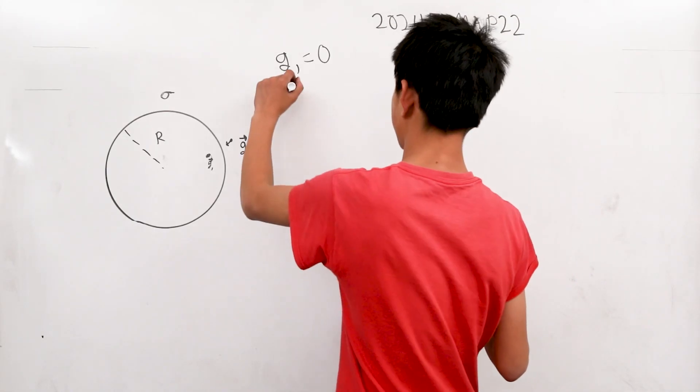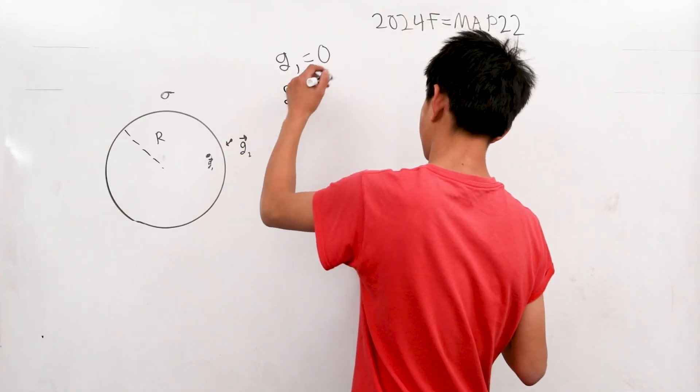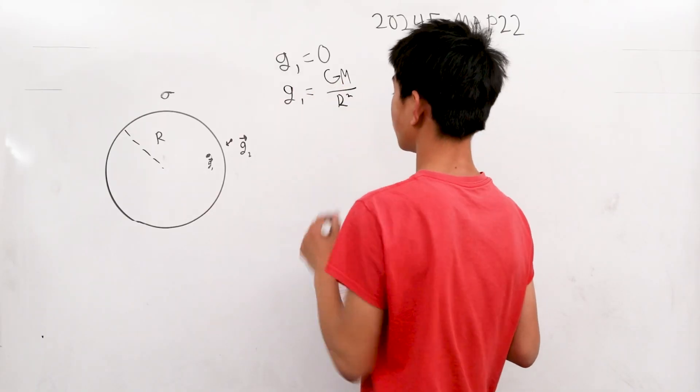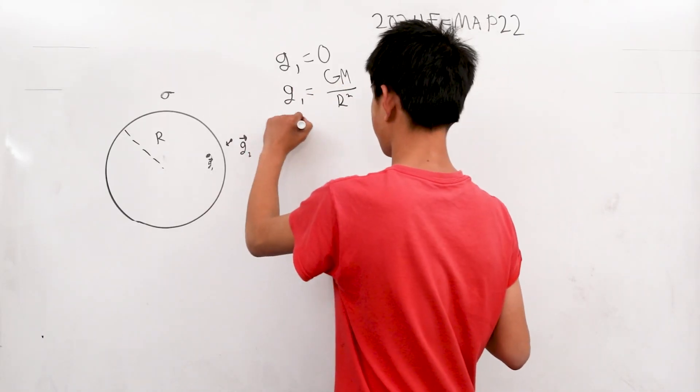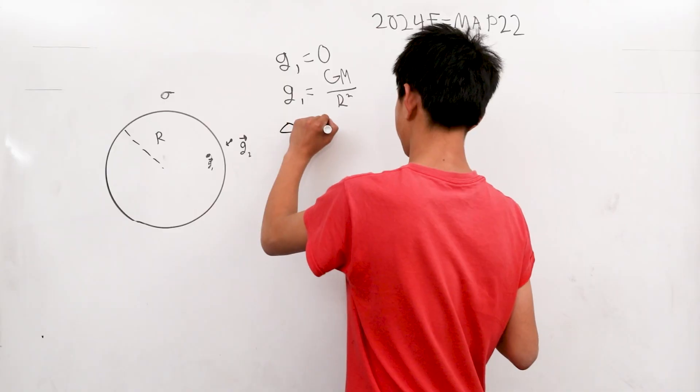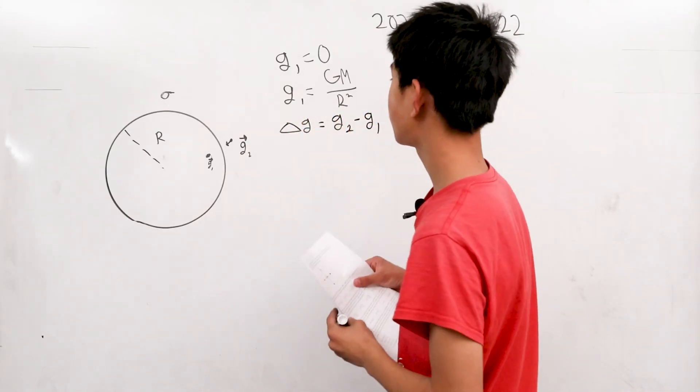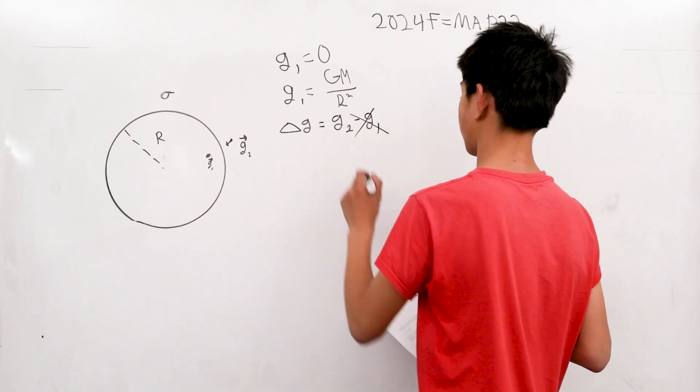We can denote that the one at the middle, the form is Gm over R squared. We want to find the change in G. So this is equal to G of 2 minus G of 1. But since we know that G of 1 is 0, that can cross out.